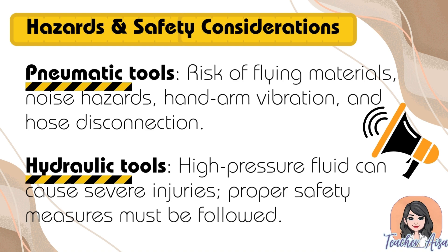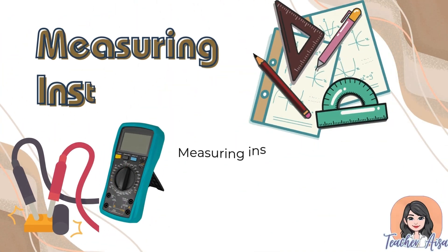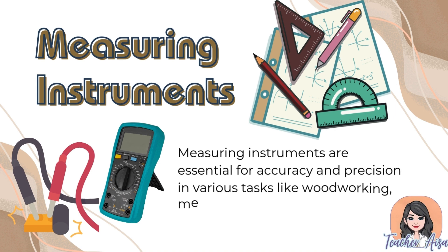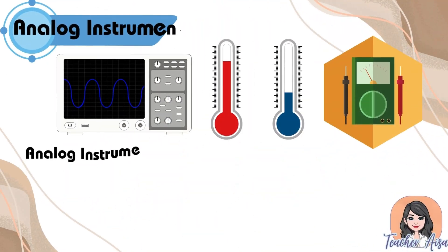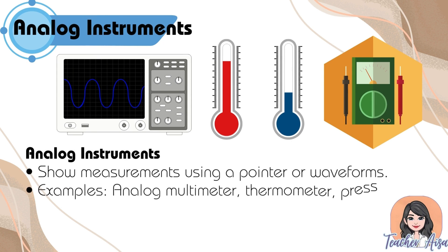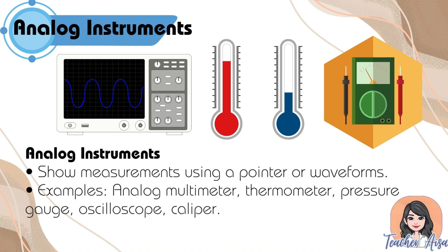Measuring instruments are essential for accuracy and precision in various tasks like woodworking, metalworking, and drafting. Analog instruments show measurements using a pointer or waveforms. Examples include: analog multimeter, thermometer, pressure gauge, oscilloscope, and caliper.